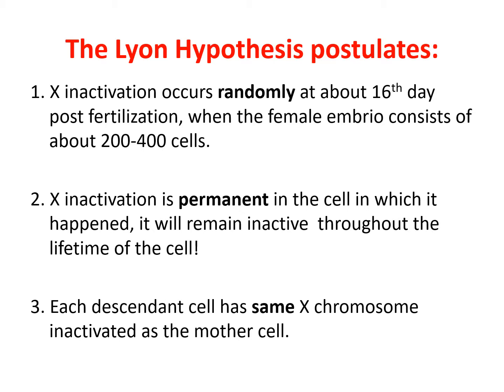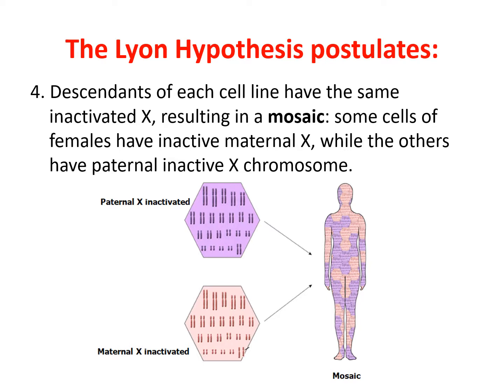Each descendant cell has the same X chromosome inactivated as the mother cell. The embryo develops by mitosis, so if in the mother cell the paternal X was inactive, all descendant cells after division will have the same X inactivated. Descendants of each cell line have the same inactive X, and this results in mosaicism in females — some cells have inactive maternal X and some cells have inactive paternal X.